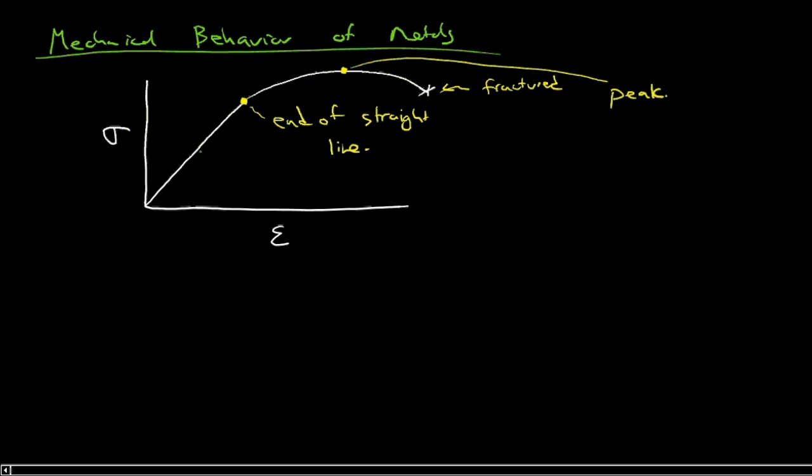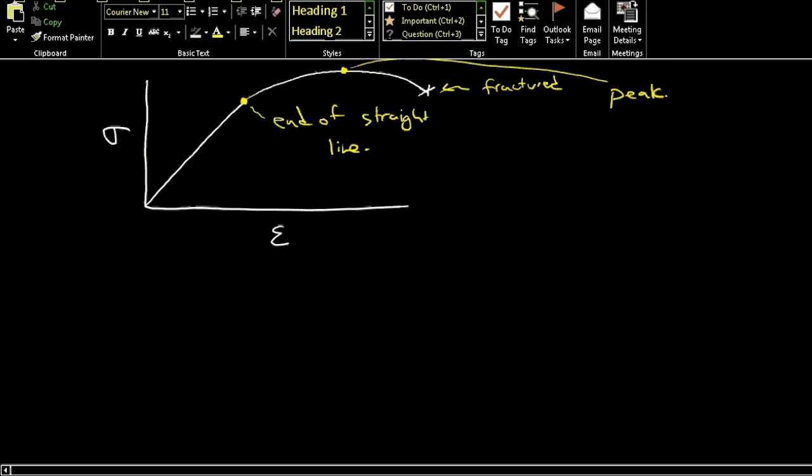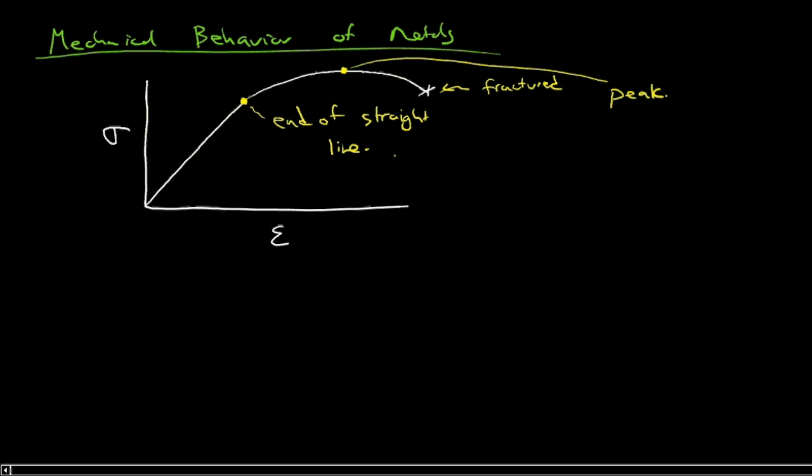So let's see, what are we going to start with? The end of the straight line we can discuss this way. Before that straight line, we had a relationship between stress and strain that was linear. Stress is directly proportional to strain through the constant of proportionality. So we can actually call the end of that straight line the proportional limit. That's all it is, it's just the end of the straight line.